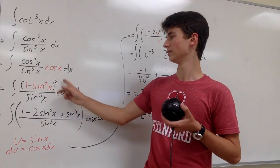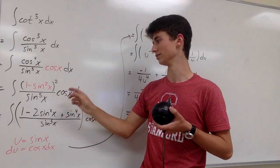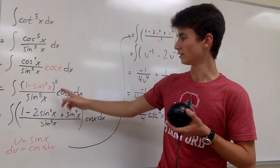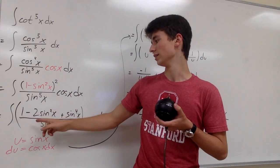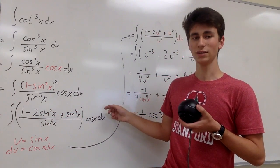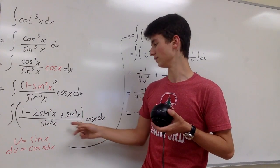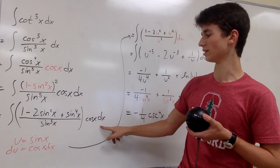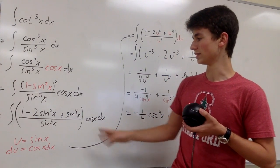And now we're going to distribute or foil this out. So we get one minus two sine squared x plus sine to the fourth of x, all over sine to the fifth of x times cosine x dx.